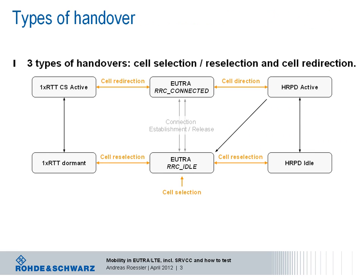Let's start simple and categorize handovers. Generally, we distinguish between three types. First, there is the initial cell selection. Then there is cell reselection — this could be within LTE while the device is moving through the LTE network where coverage is still provided, but it could also be from LTE to another radio access technology, short RAT. In my example, I am using HRPD, High Rate Packet Data, also known as 1X EVDO and 1X RTT, so 3GPP2 defined technologies.